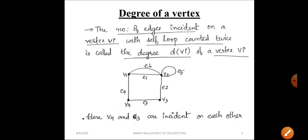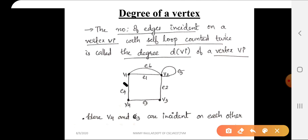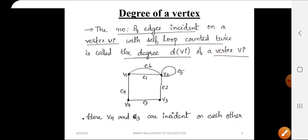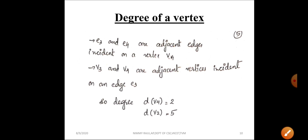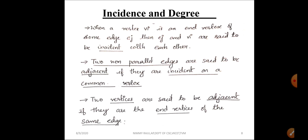In the case of v4, e4 and e3 are incident on it, so the degree is 2, d(v4) = 2. In directed graphs, we will consider in-degree and out-degree, which we will cover in the next module.